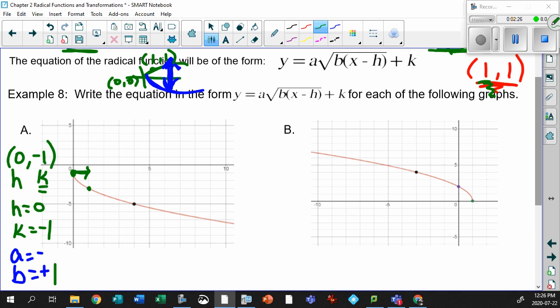But now, take a look at your a value. Your a value is negative, but it's also, look at this. If it wasn't stretched, it would have been there. There's your value of 1. You've actually gone down a value of 2. So your a value is not only flipped, you're not only flipping the graph, but you're stretching it a value of 2.